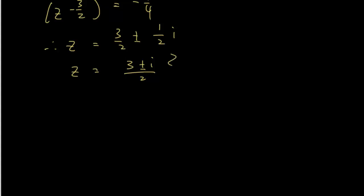So again, as you can see, we have a conjugate pair. So what is the conjugate pair? So z1 would be 3 plus i over 2, and then z2 will be 3 minus i over 2.